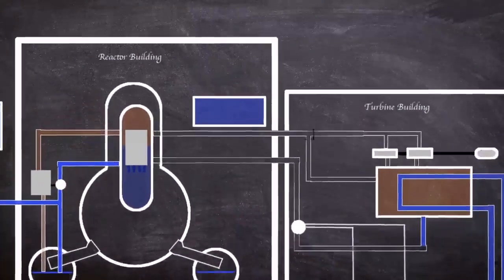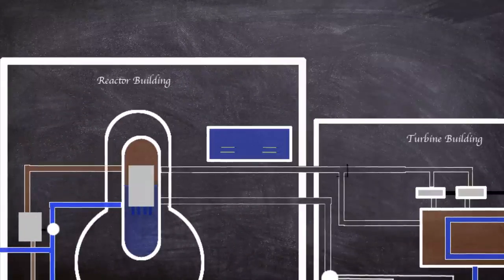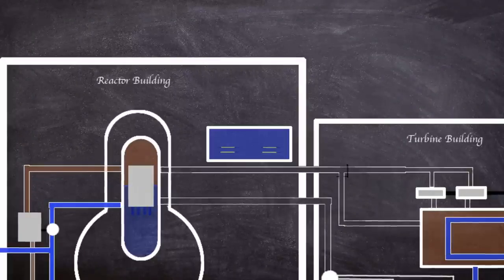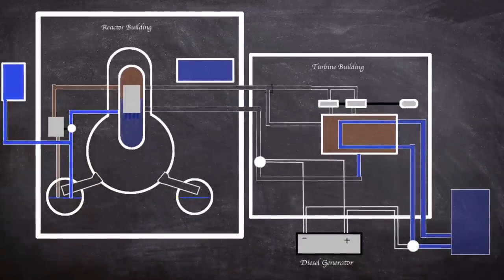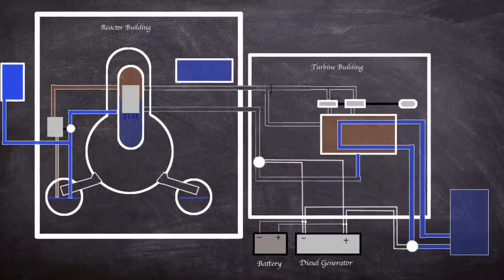However, not only the operating reactors on 11th March had decay heat. During refueling, spent fuel rods are placed in pools near each reactor. These are also still hot, so effective cooling is normally provided by electrical power. If it was just an earthquake, the event would have been effectively managed using on-site generators and batteries.